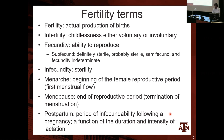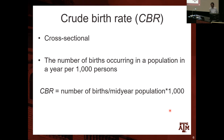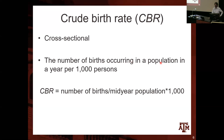If you want to ask any questions, just unmute yourselves. Now, knowing these major fertility concepts, we go into the indicators. The simplest indicator for understanding the overall number of births in a society is the crude birth rate. It's cross-sectional — information collected for a specific country or geographic area in a specific year. You take the number of births occurring in a specific population, divide by the population in the middle of that year, and multiply by 1,000.